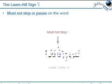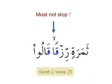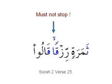The lam-alif sign means you must not stop or pause on the word — you must carry on. An example is surah number two, verse 25. The small lam-alif means you have to read completely through; you cannot stop on the word with the fat-hatayn. You'd have to read straight through that. The color coding there relates to ikhfa — the hiding of the noon sound — which we covered in a previous lesson.